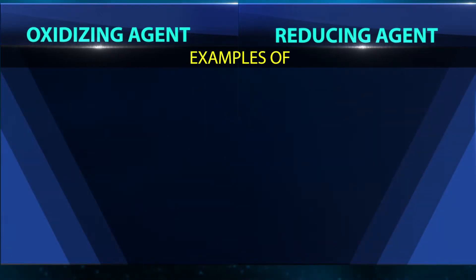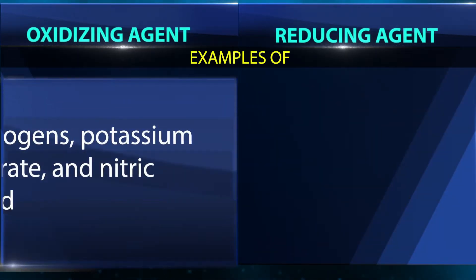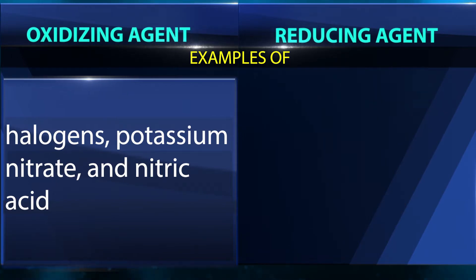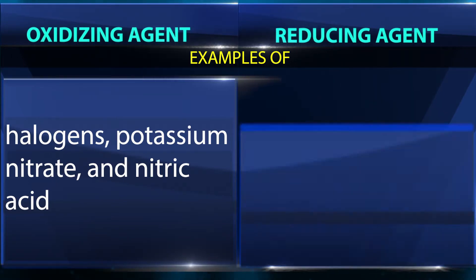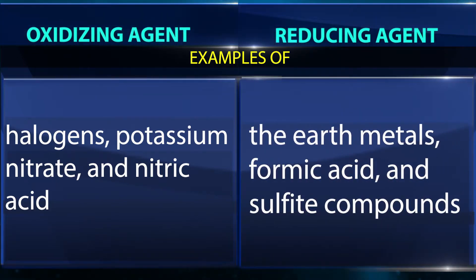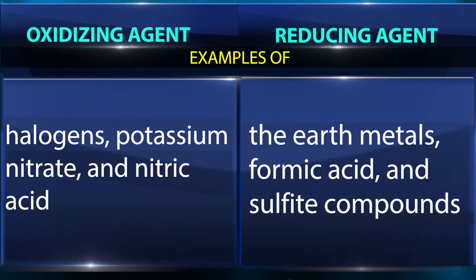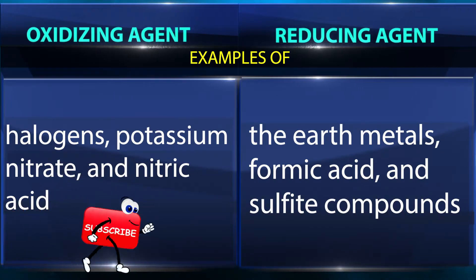Examples of oxidizing agents include halogens, potassium nitrate, and nitric acid. Halogens favor gaining an electron to obtain a noble gas configuration.